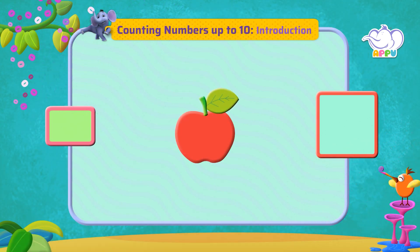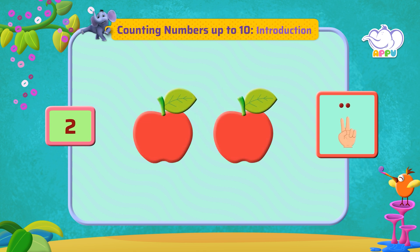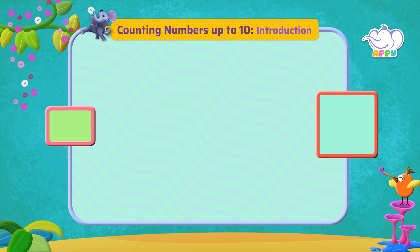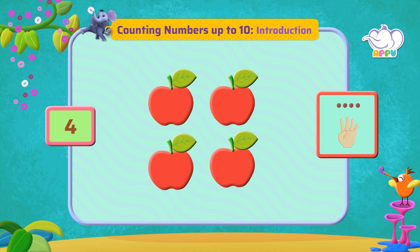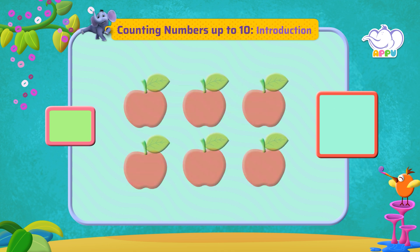How many apples can we see? This is one apple, two apples, three apples, four apples, five apples, six apples.